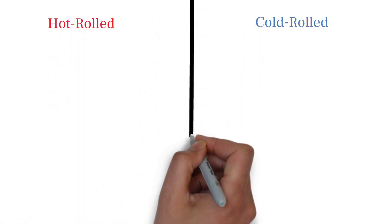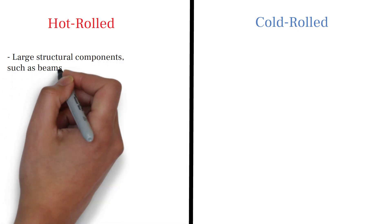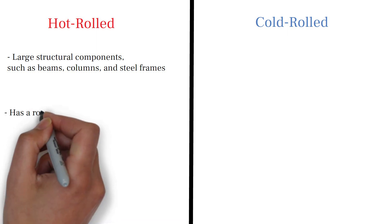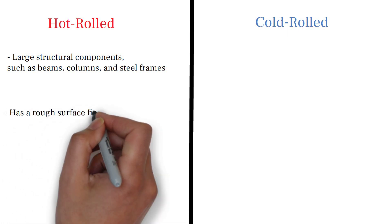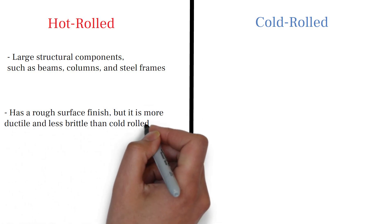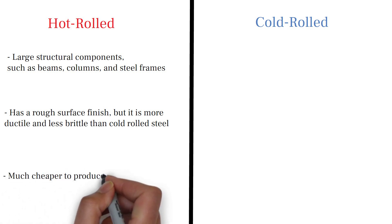Hot rolled steel is often used in construction of large structural components, such as beams, columns and steel frames. It is also used for the production of steel plates, sheets and strips used in construction. Hot rolled steel has a rough surface finish, but is more ductile and less brittle than cold rolled steel, making it well suited for construction applications where it will be subjected to stress and strain.